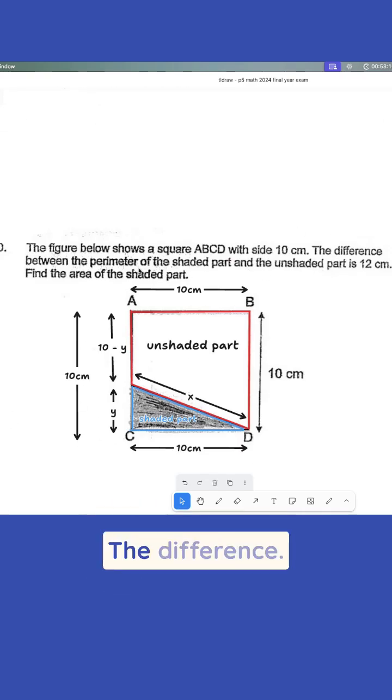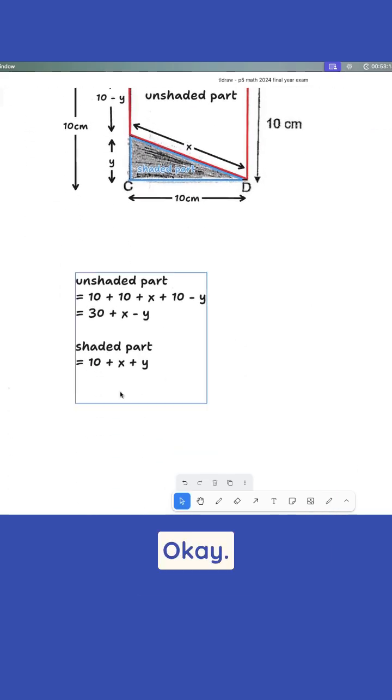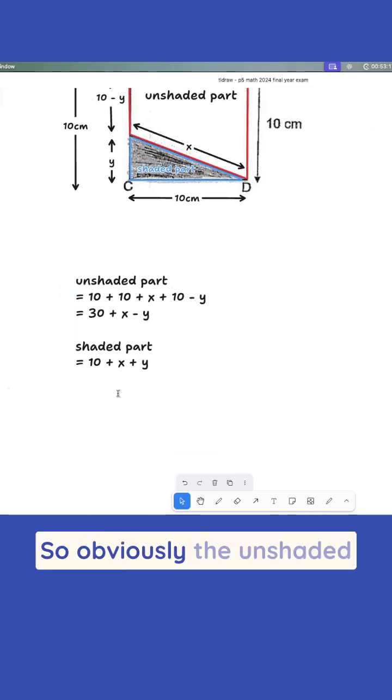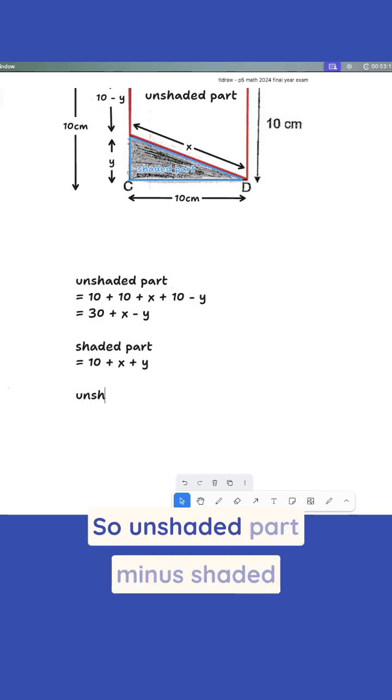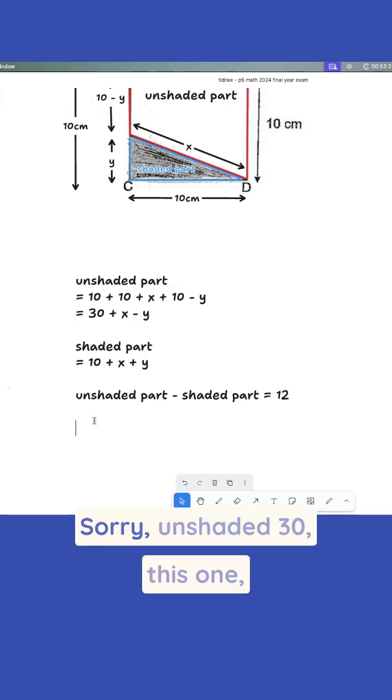So we also know the difference. The difference between the perimeter of the shaded part and unshaded part is 12 centimeters. So obviously the unshaded part is bigger. So unshaded part minus shaded part is equal to 12. Then we can swap in. So 30 plus X minus Y. Sorry, unshaded 30. This one bracket. I'll just put bracket and then minus.